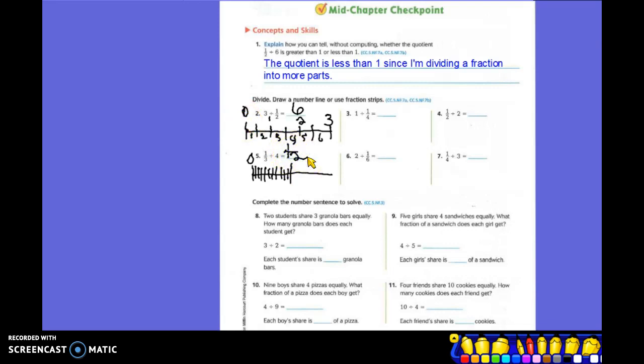Okay, we're going to go on down and look at number 8. 2 students share 3 granola bars equally. How many granola bars does each student get? If I have, and all you have to do is the number sentence here, but you could draw 3 granola bars. And we're splitting them between 2 people. So each person is going to get a half, a half, and a half. So they're going to get 3 halves or 1 and 1 half granola bars.